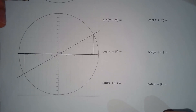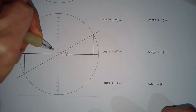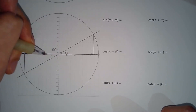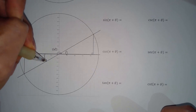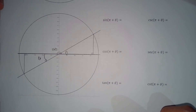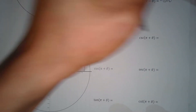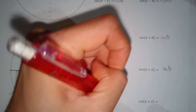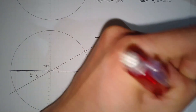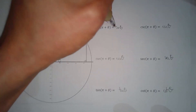Now working with pi plus theta: the reference angle of pi plus theta is theta. Since the reference angle is theta, we do not switch to the complementary trig function. So we have sine theta, cosecant theta, cos theta, secant theta, tan theta, cotan theta. Be careful — pi plus theta is in the third quadrant where only tan is positive, so the others carry negative signs.